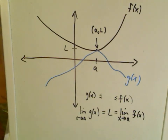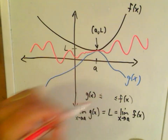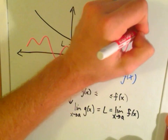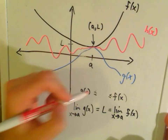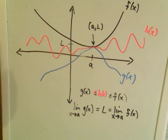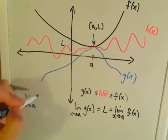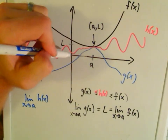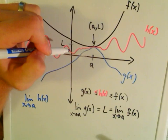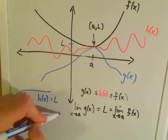The idea with the squeeze theorem is suppose we have some other function that's trapped in between there. If we call the red one h(x), then h(x) is greater than or equal to g(x) but less than or equal to f(x). Since h(x) is squeezed in between f(x) and g(x), we can say the limit as x approaches a of h(x) must also equal L.